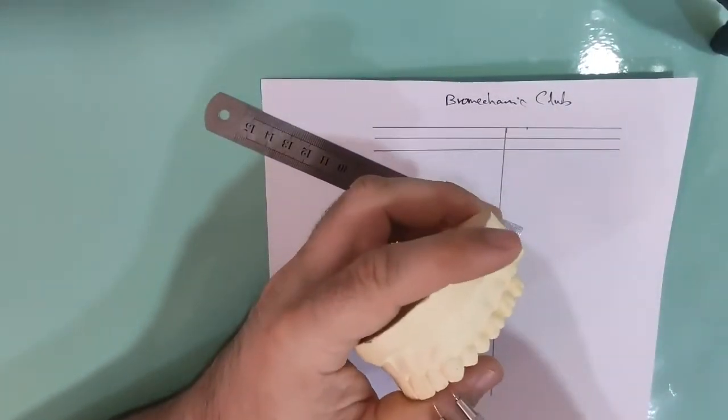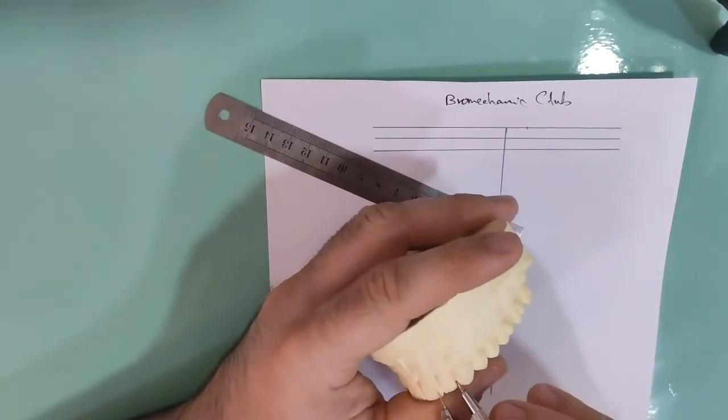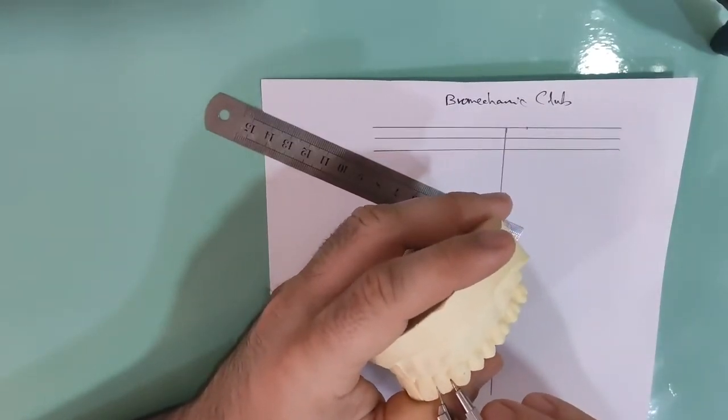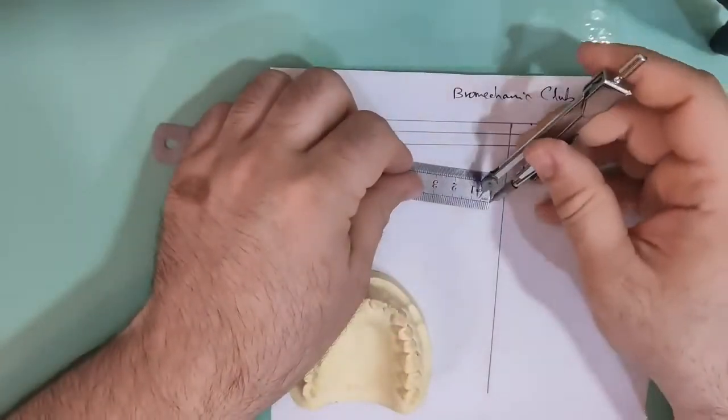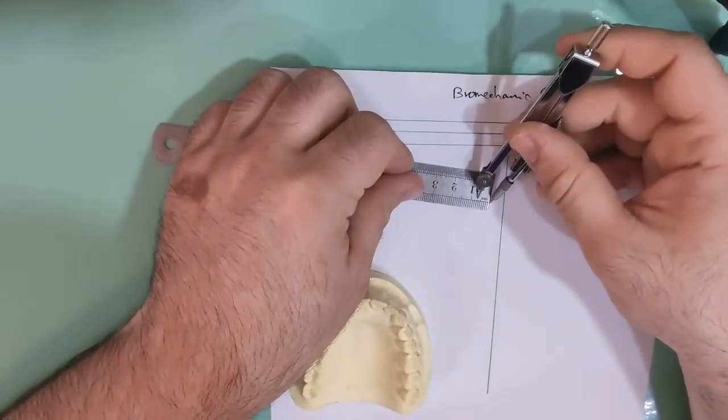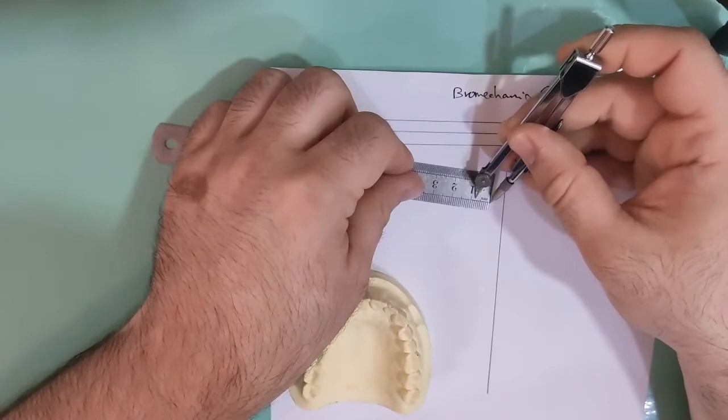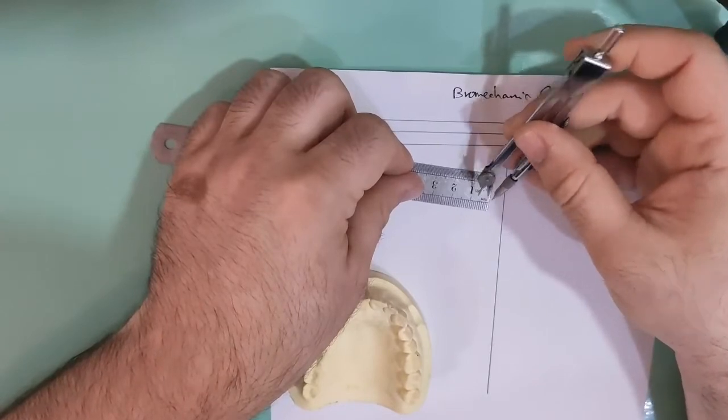Then we measure the distal width of lateral and add one millimeter also. So we have here seven millimeter, we add one millimeter, so it's eight millimeter.